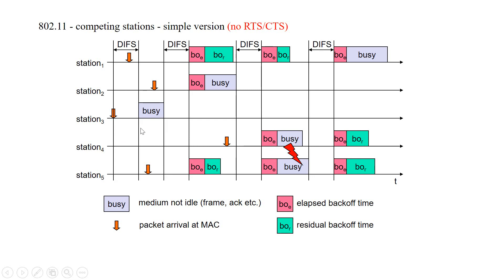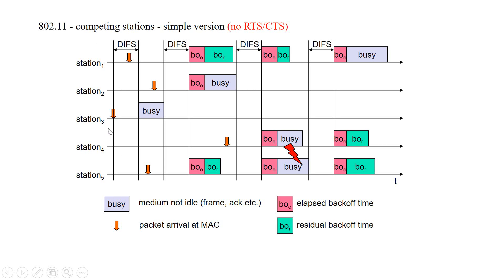This diagram explains the basic access mechanism of IEEE 802.11 for five stations. Station three has the first request from a higher layer to send a packet. It senses the medium, waits for DIFS, and accesses the medium. Stations one, two, and five have to wait until the medium is idle again after station three stops transmitting. All three stations then choose a back-off time within the contention window and start counting down their back-off timers while station three is transferring data.